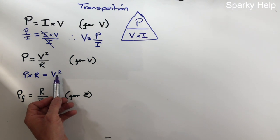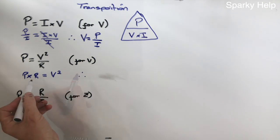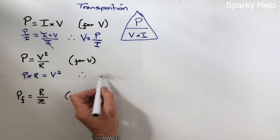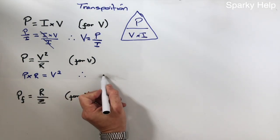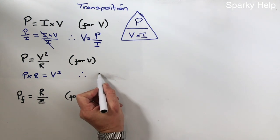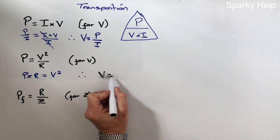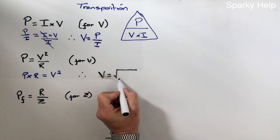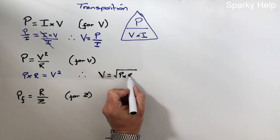We know it's squared, so the opposite to square is a square root, so we've got to square root all of the other side. What we end up with is we square root the entire side, so V is equal to the square root of power times resistance.